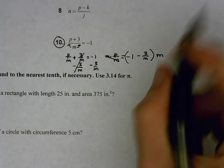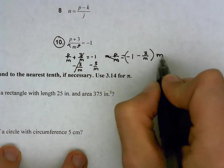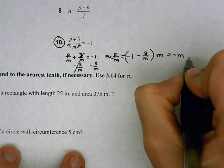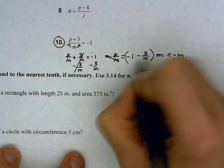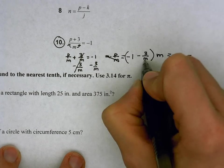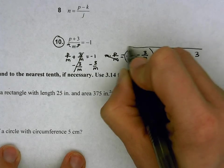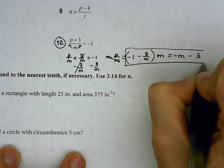And so then if we distributed the m in, we'd get negative m, because negative 1 times m is negative m, minus the m's would cancel here, which is 3. And so that would be with the distribution.